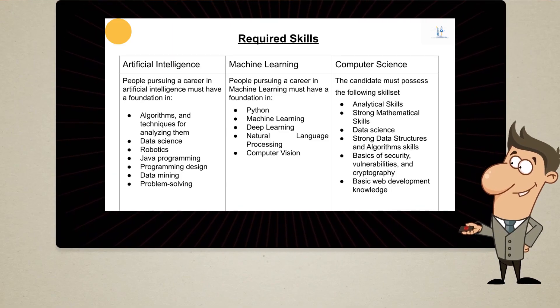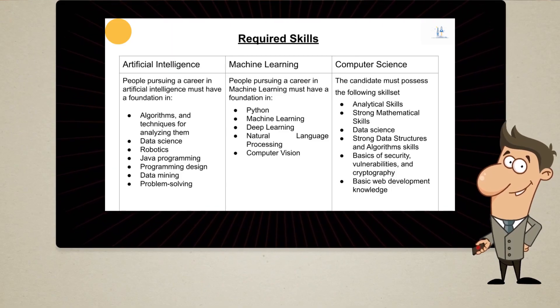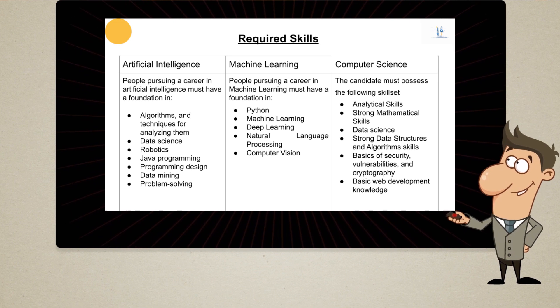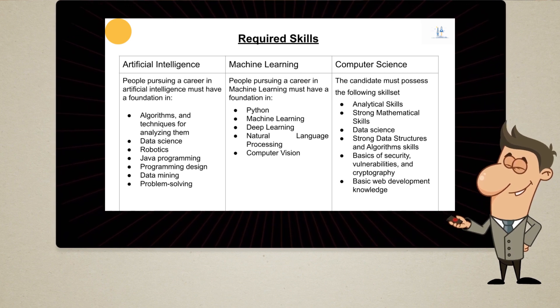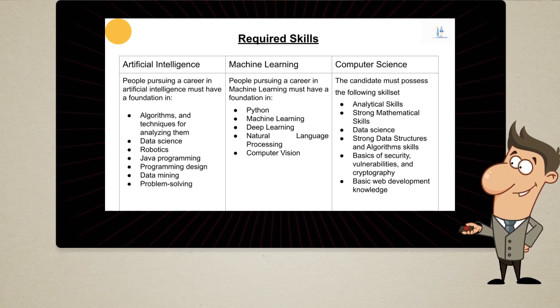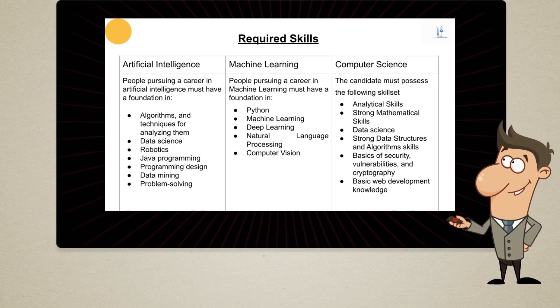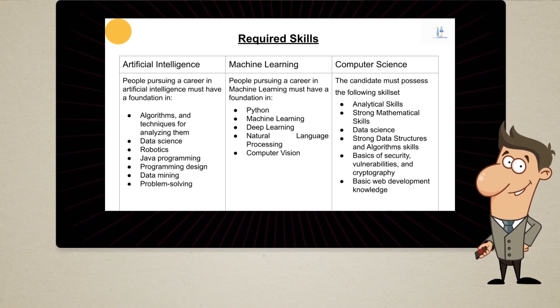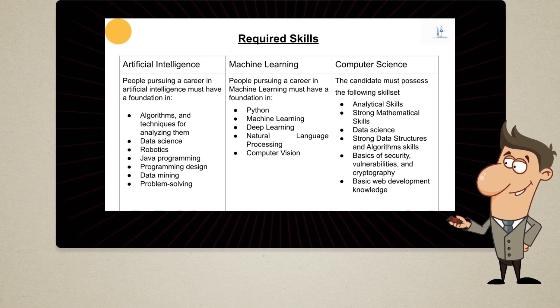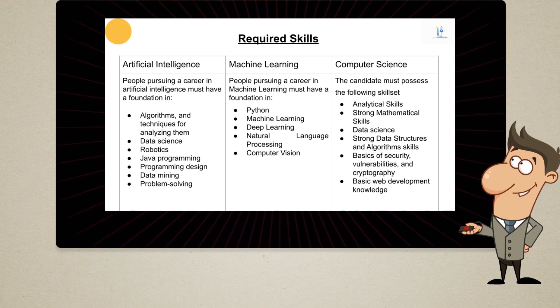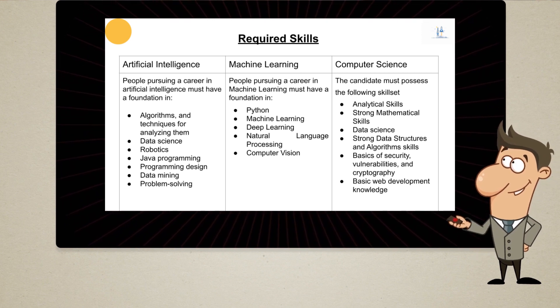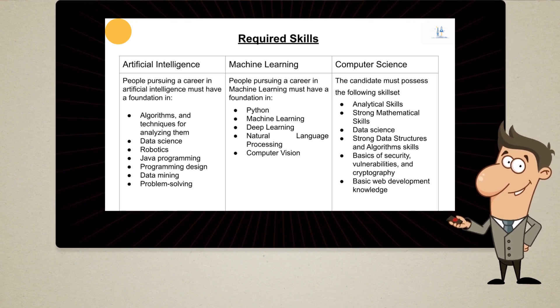If we talk about skills required, for AI you need to learn algorithms, techniques, analyzing skills, data science, robotics, Java programming, programming design, data mining, and problem solving skills. For machine learning, the key skills are Python, machine learning, deep learning, natural language processing, and computer vision.